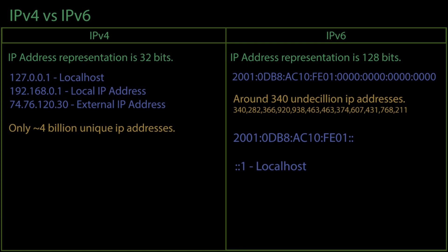Since Internet Protocol version 4 is widely used and we are running out of IP addresses, we cannot allow every device to have a unique IP address. We are using something called Network Address Translation as a temporary workaround for this, which will be explained in the next tutorial.